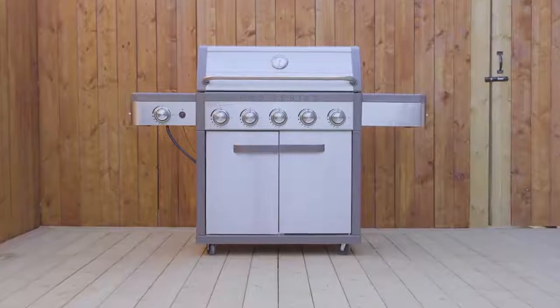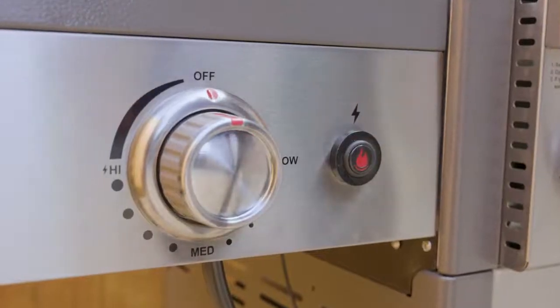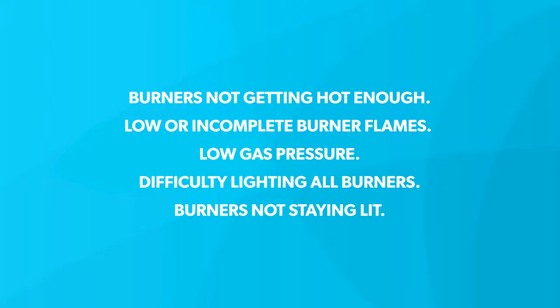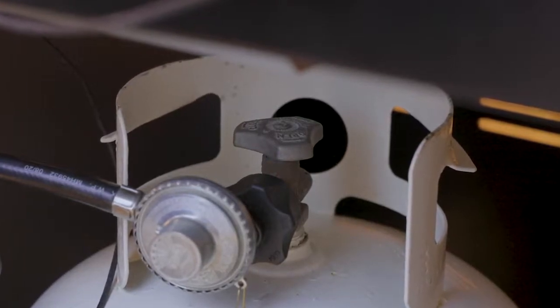If you are experiencing any of the following performance issues with your Members Mark Pro Series BBQ—burners not getting hot enough, lower or incomplete burner flames, low gas pressure, difficulty lighting all burners, or burners not staying lit—you have either not followed the correct lighting or shutdown procedure, or you have a leak or poor connection.